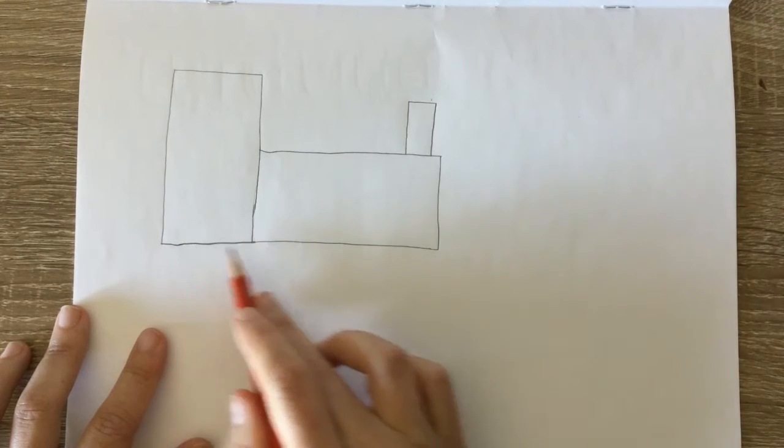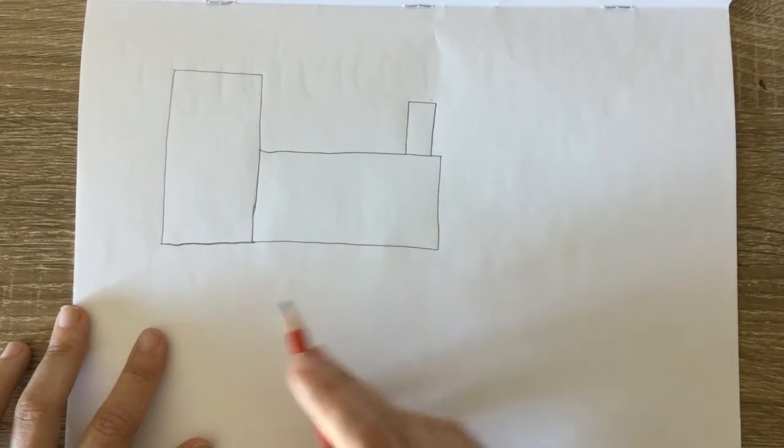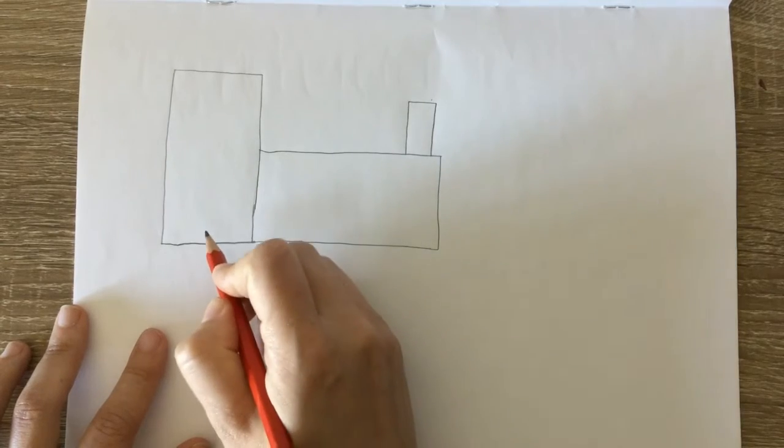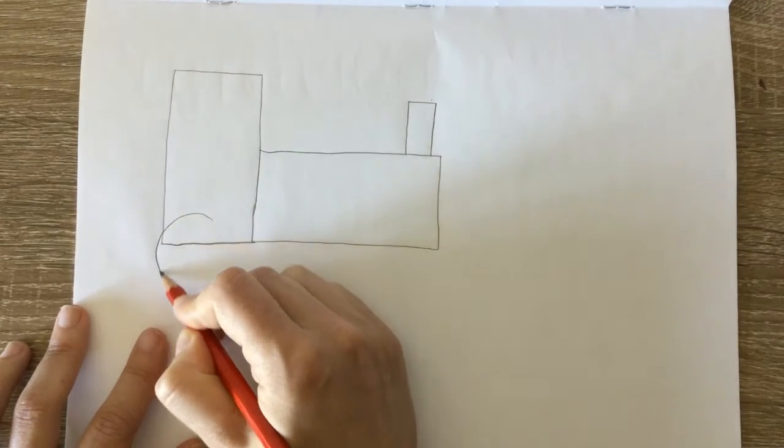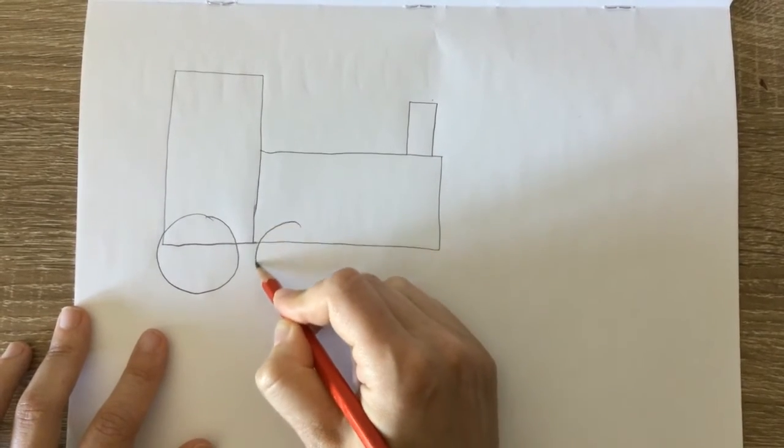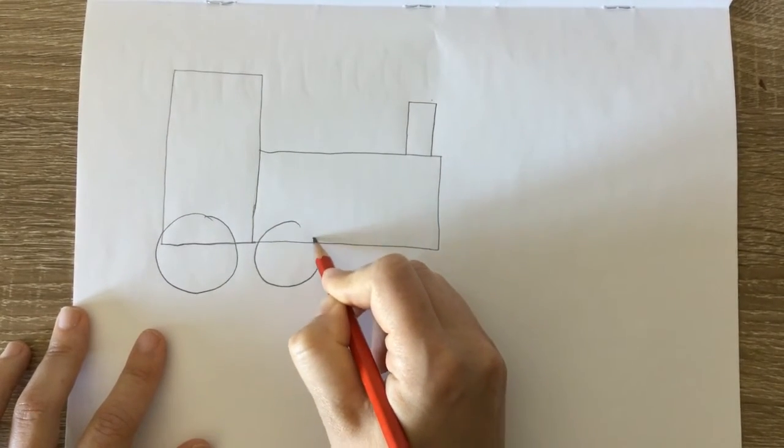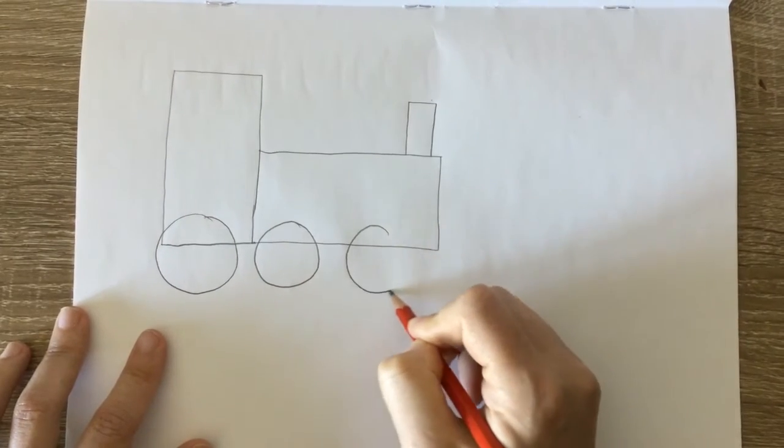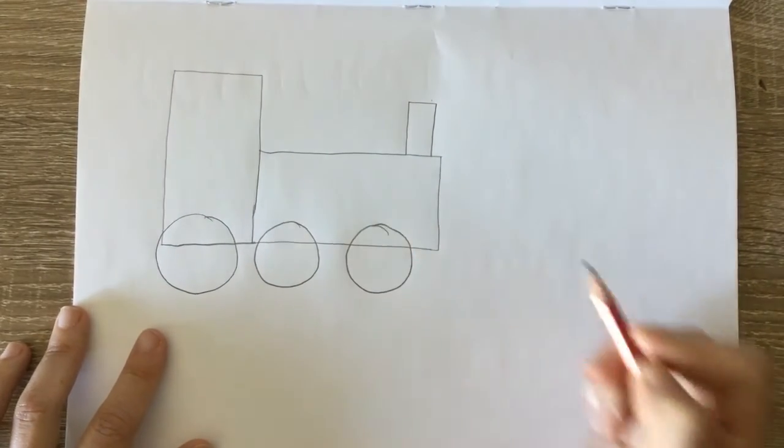And I'm going to draw some circles here along the bottom of my train. So I'm going to draw one circle. Two circles. And I'm going to draw three circles for my wheels.